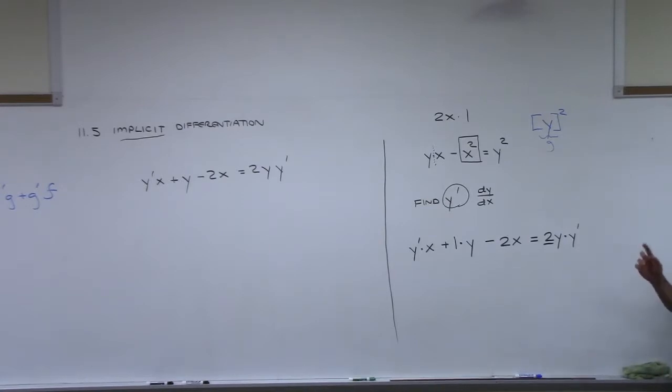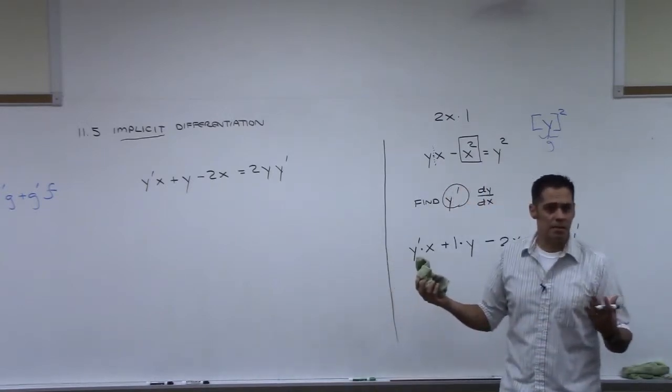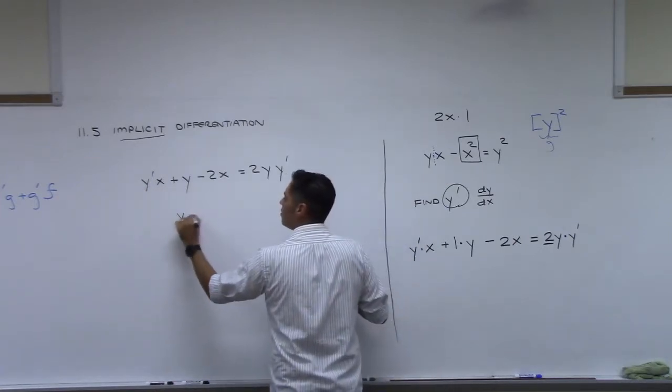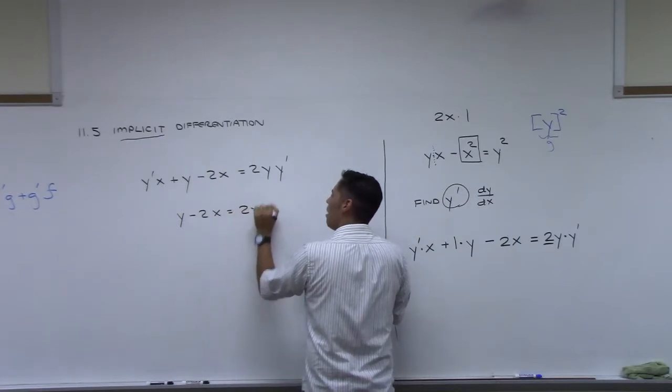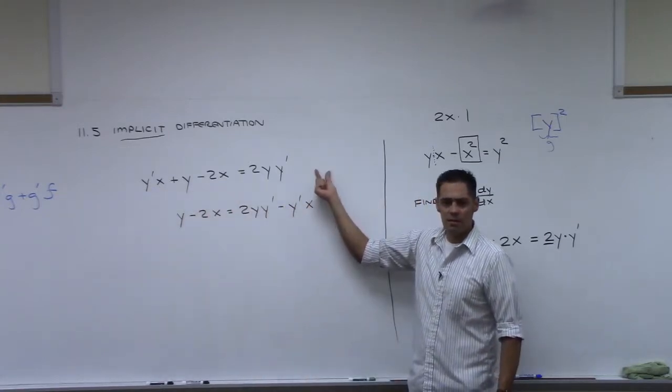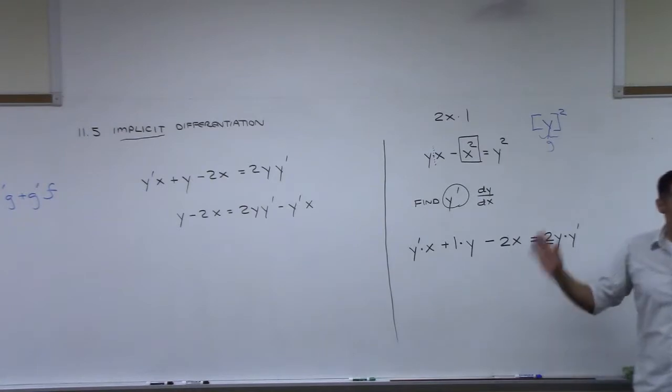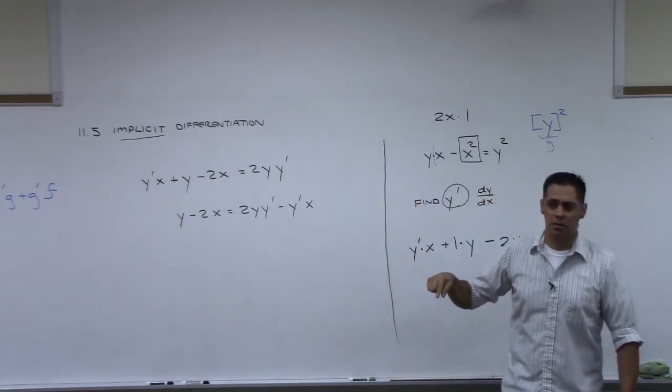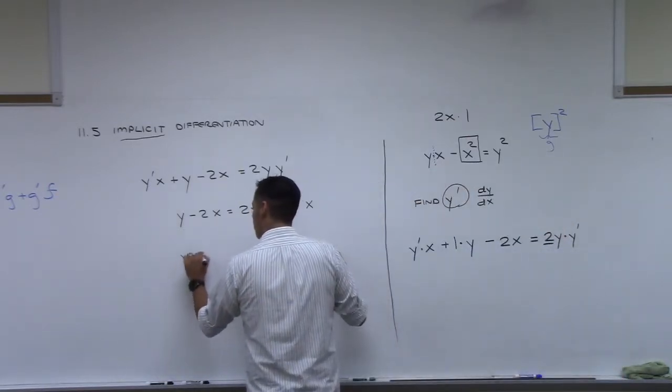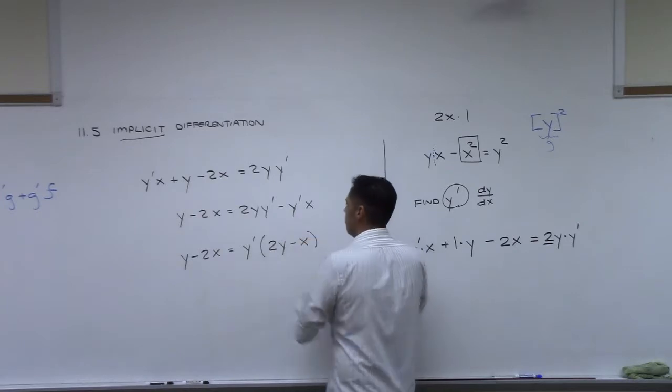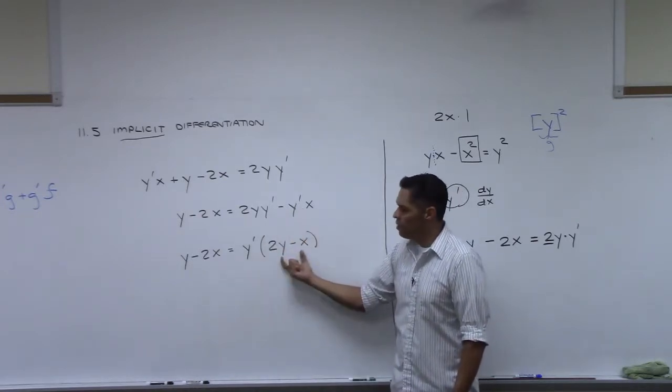Now, what we need to do is get all of our y primes on one side of the equation, because I'm trying to figure out what y prime is. So let's move this guy over here. We'll have y minus 2x equals 2y y prime minus y prime x. Notice that everything on the right hand side has a y prime. So what I'm going to do now is factor a y prime out.